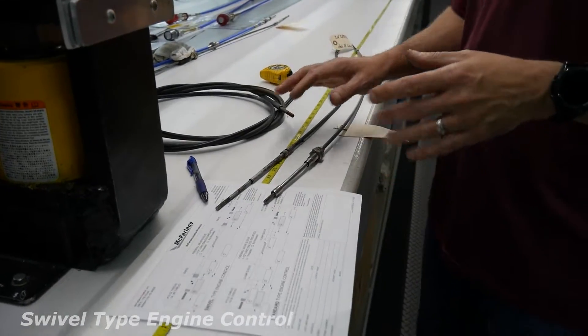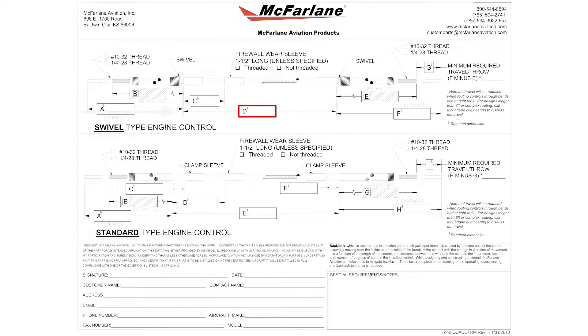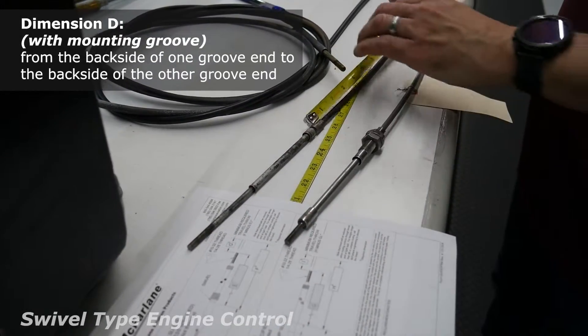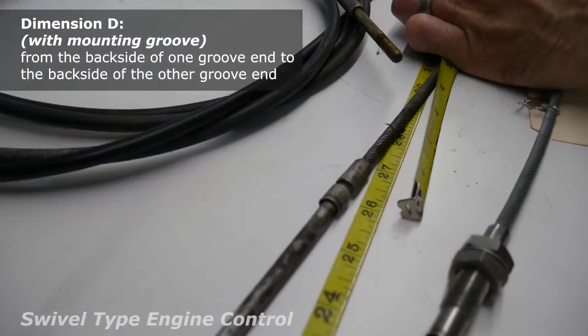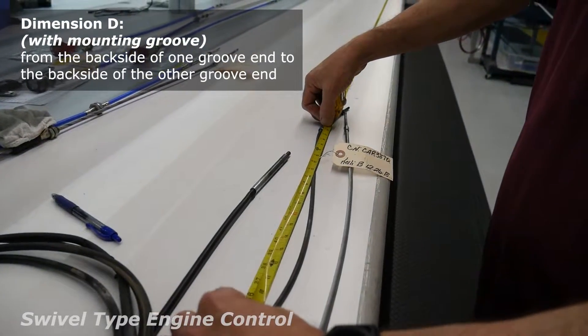When we measure this, we're looking for dimension D, which would be from, like indicated here, from the groove, back side of the groove there, to the back side of the groove down here.